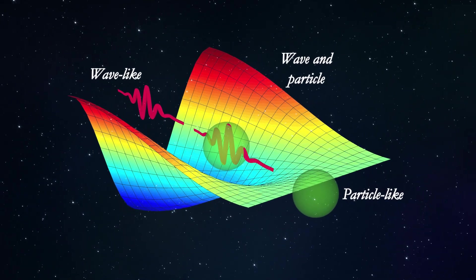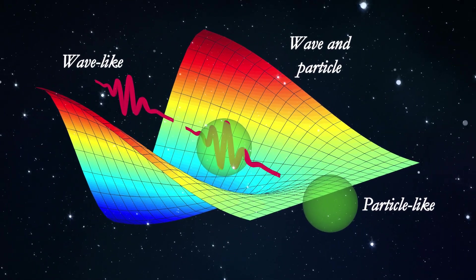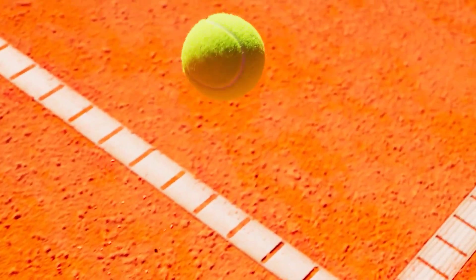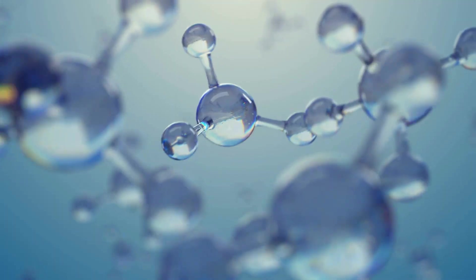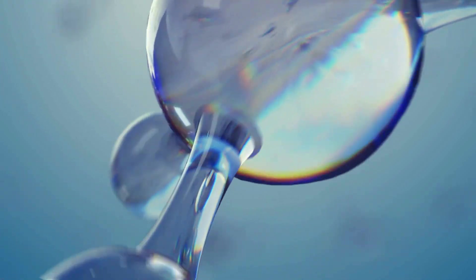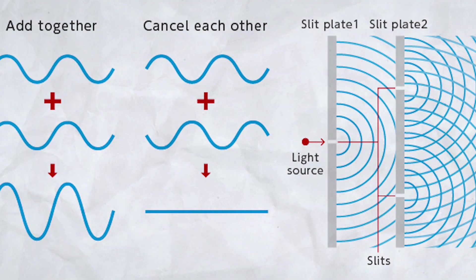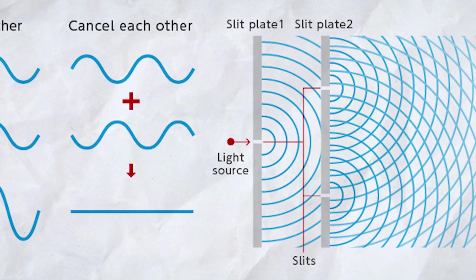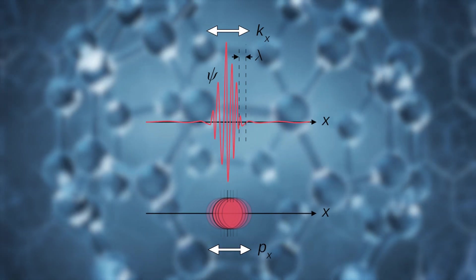Electrons can exhibit both wave-like and particle-like behavior in a phenomenon known as wave-particle duality. So imagine you're watching a tennis ball being thrown at a wall. Normally, you'd expect it to behave like a particle. It has a specific position, and you can predict where it'll bounce. But if we shrink down to the quantum level and throw an electron at a barrier, it doesn't behave like a neat little particle. Instead, it spreads out like a wave passing through multiple holes in the barrier simultaneously.